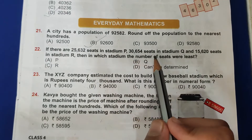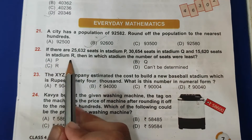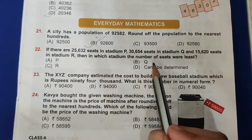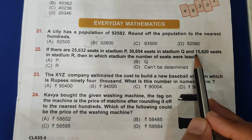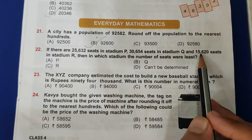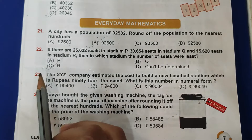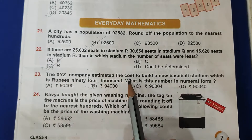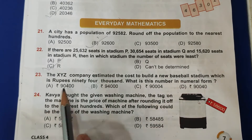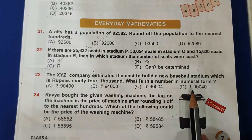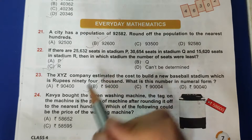Twenty-second question: if there are 25,632 seats in stadium P, 30,654 seats in stadium Q, and 15,620 seats in stadium R, then in which stadium is the number of seats the least? The least seats are in stadium R, that are 15,620. So C, R, is the correct answer. Twenty-third question: the XYZ company estimated the cost to build a new baseball stadium which is Rs. 94,000. What is the numeral form? This is 94,000 in numeral form. So B is the correct answer.